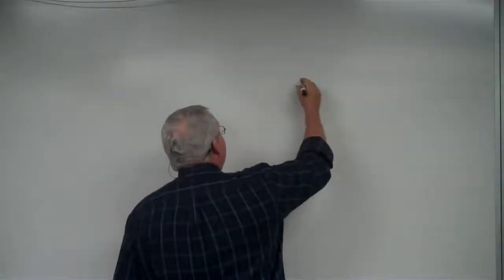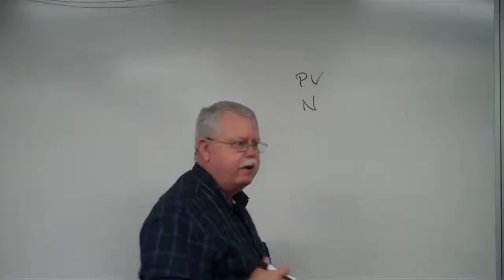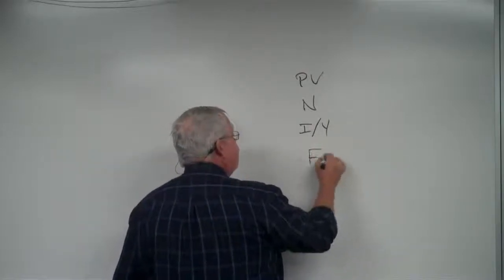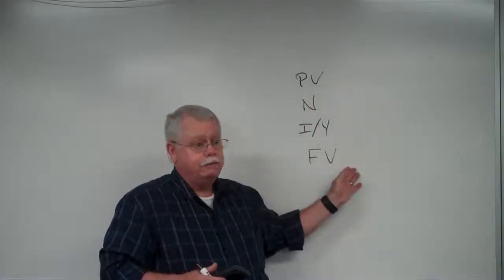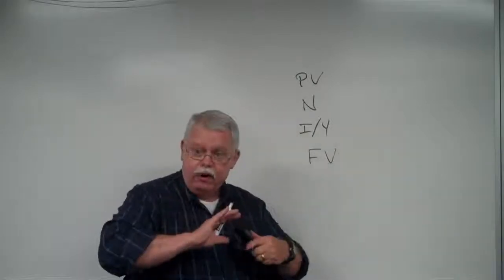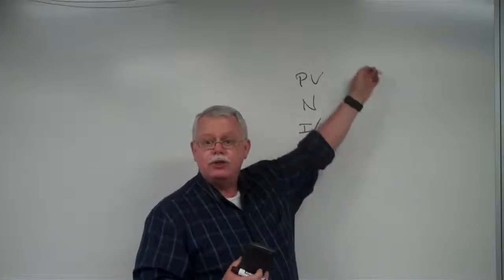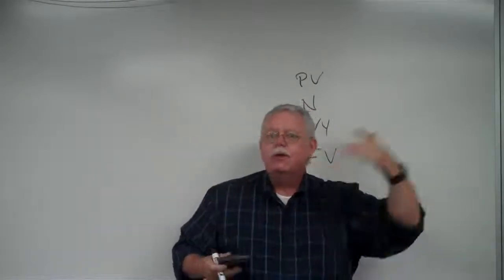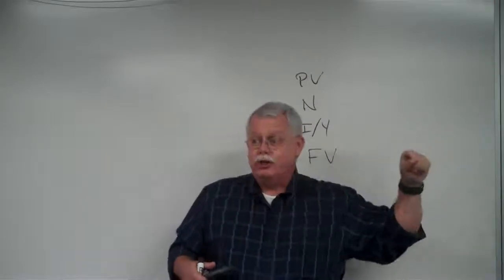Our basic calculator buttons are: PV for present value, N for the number of years or months — however often your interest is compounded — and I/Y for the annual interest rate you're going to earn, and FV for future value. If your calculator has these buttons, you're in good shape. I'll give you three of these and you calculate the fourth. What we're dealing with first is called lump sum values — a single value now and what it's worth in the future, or how much to invest today to reach a future goal.